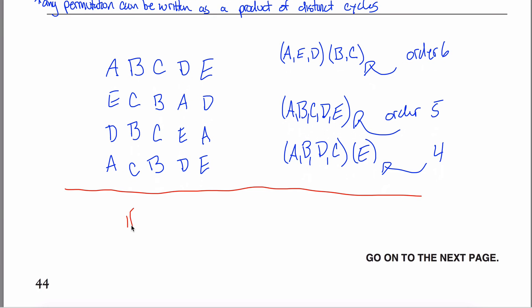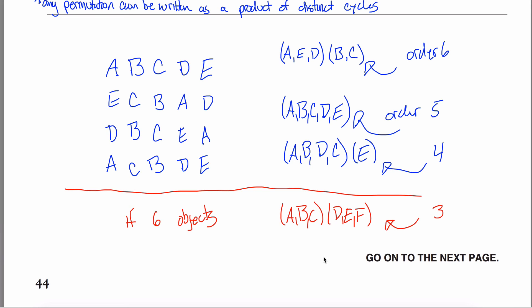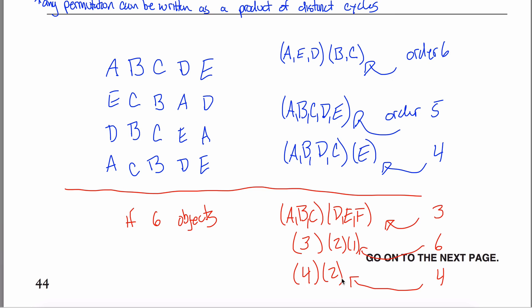As a bonus: if you had six objects, how would the answer change? A (3,3) partition gives LCM(3,3)=3 — not helpful. A (3,2,1) partition gives LCM(3,2,1)=6. A (4,2) partition gives LCM(4,2)=4. A (5,1) partition gives 5. A (2,2,2) partition gives 2. So for S6, the maximum order is still 6.